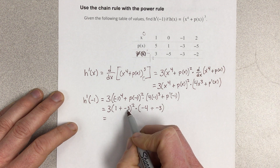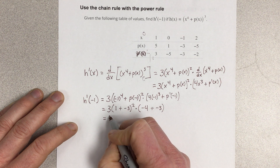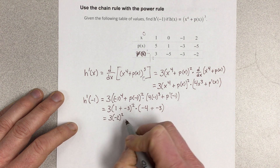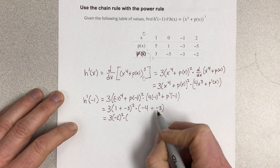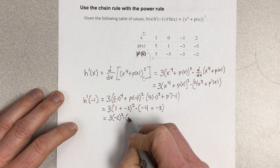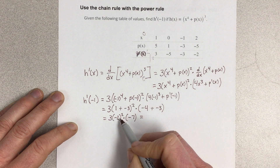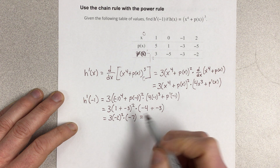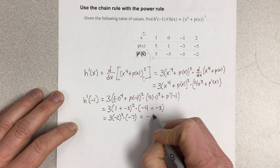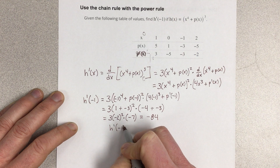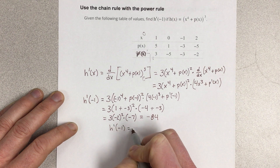So 1 plus negative 3 is negative 2. So 3 times negative 2 squared times negative 7. That's 4 times 3 which is 12, and 12 times 7 would be negative 84. So h prime of negative 1 is negative 84.